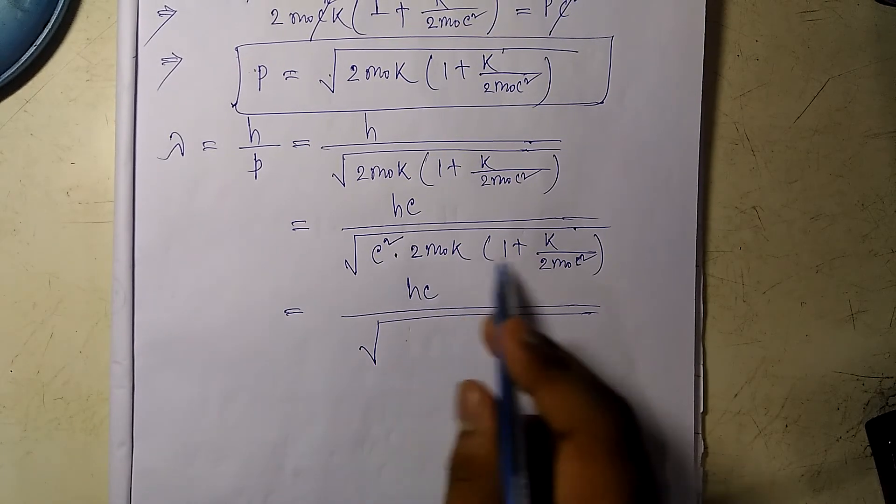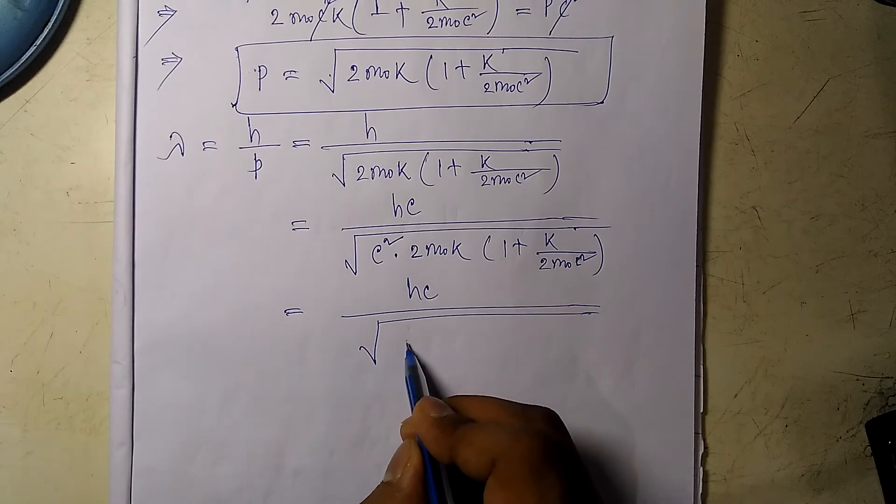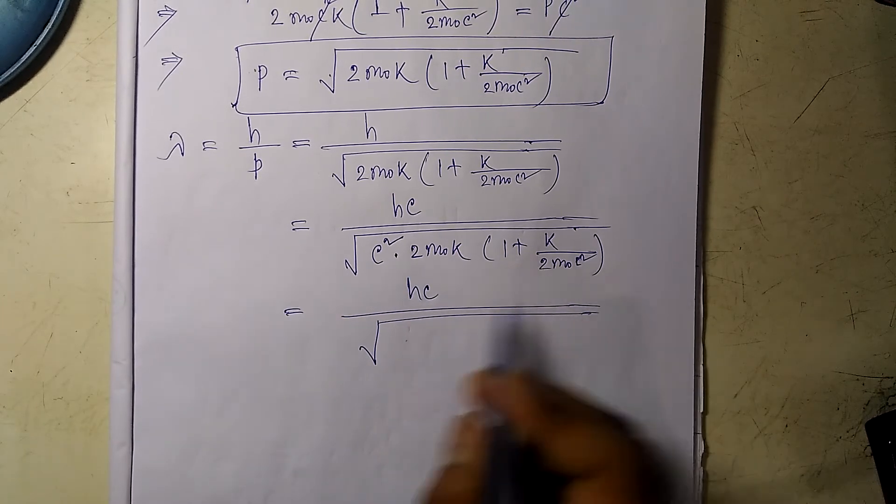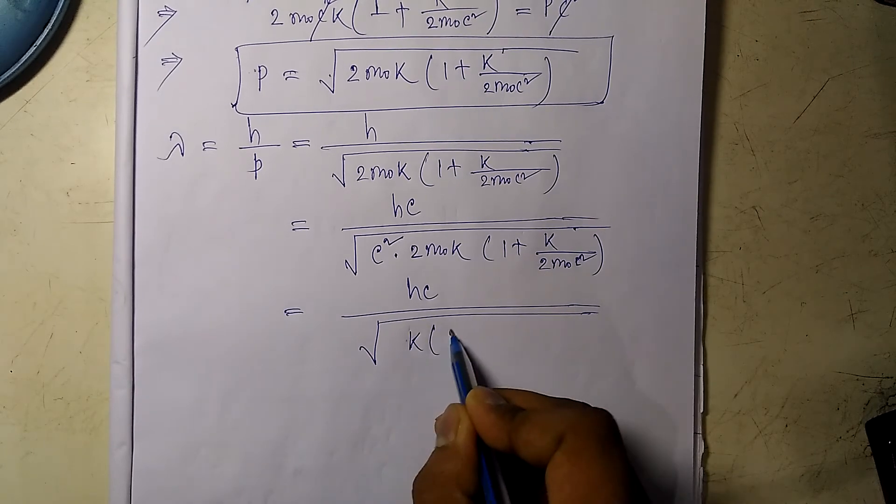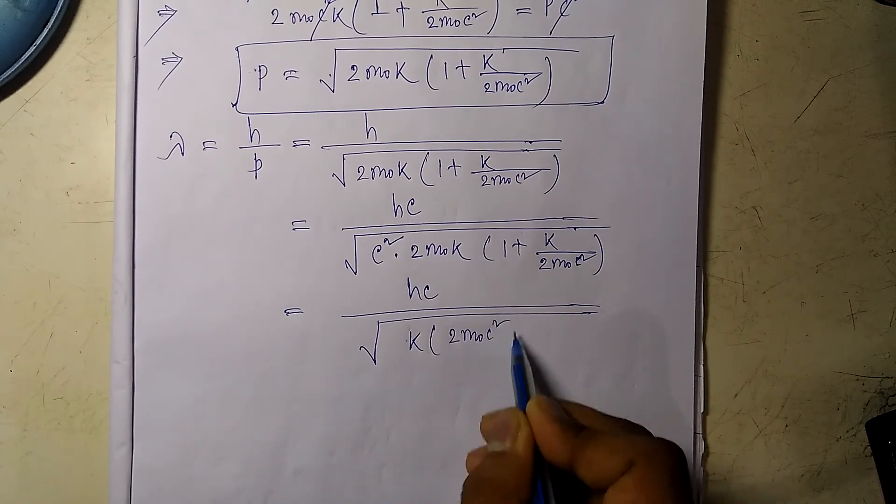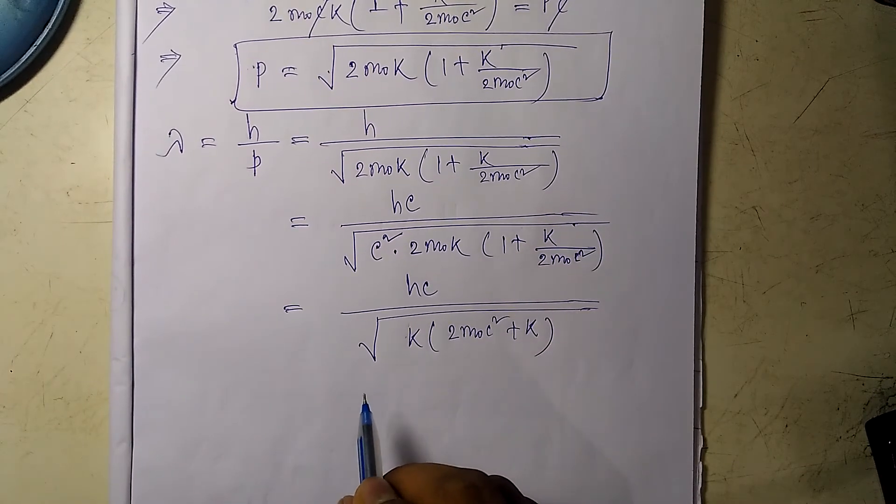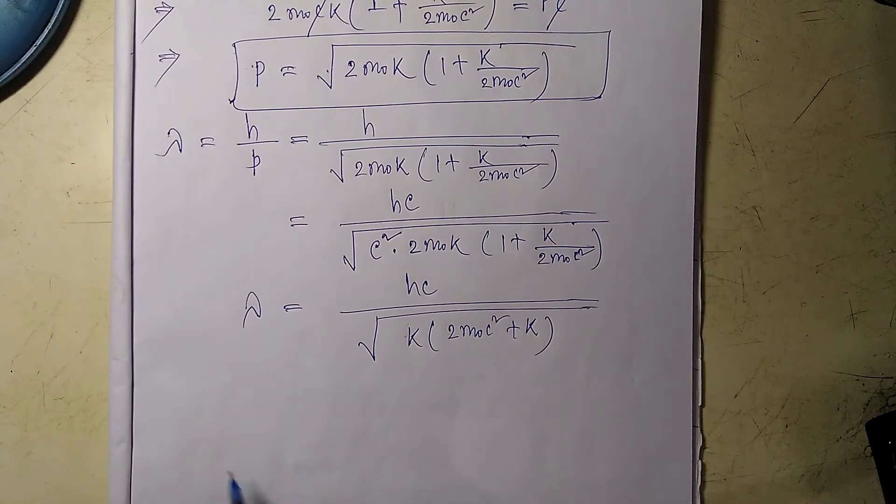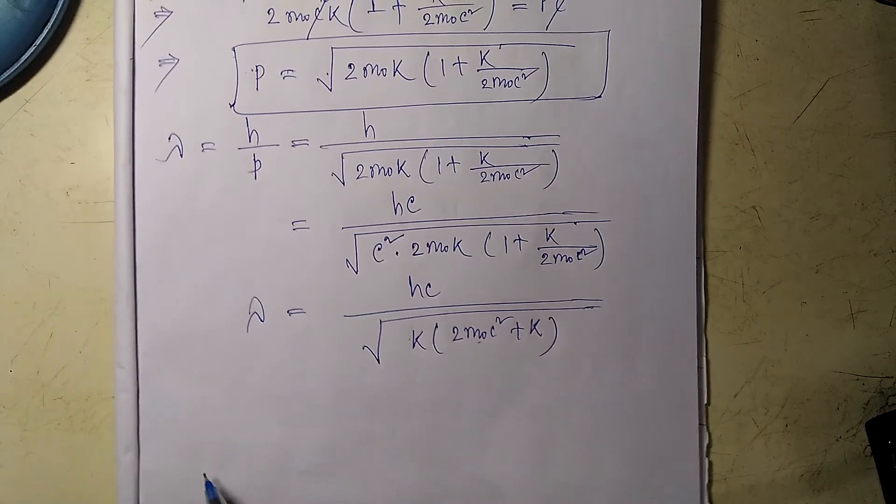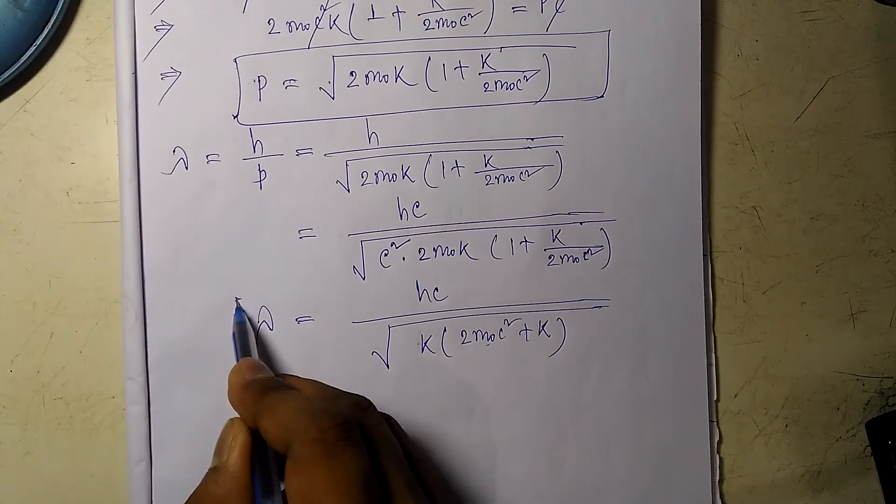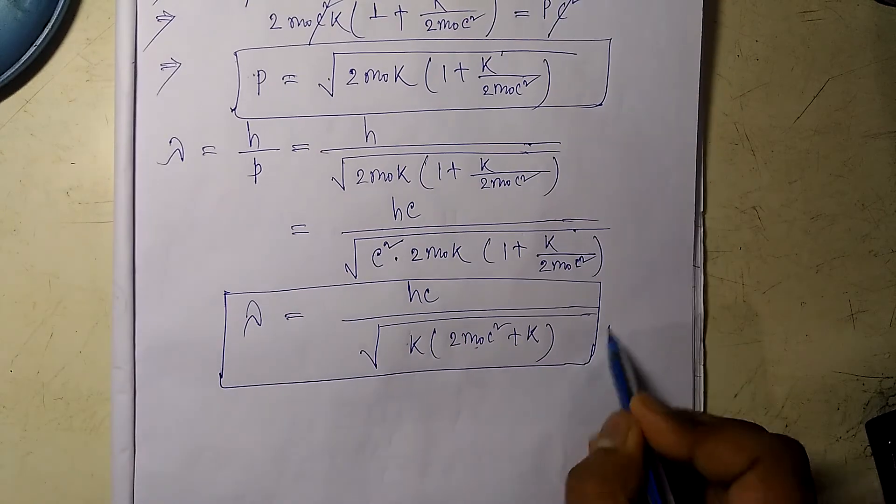If I multiply 2m₀c² inside this bracket, I am left with hc divided by the square root of K times (2m₀c² plus K). And this is the formula we are actually looking for, so we have just proven the formula.